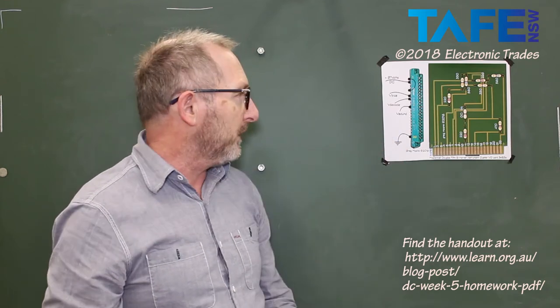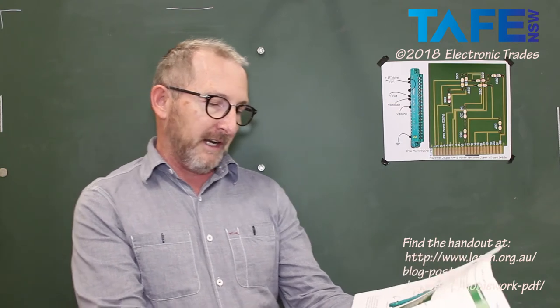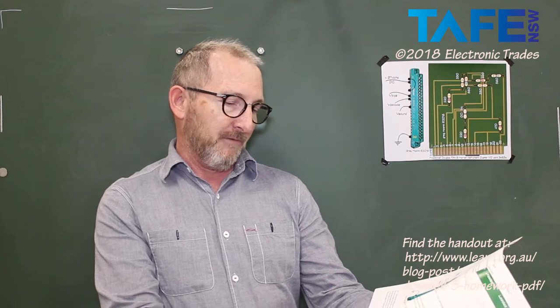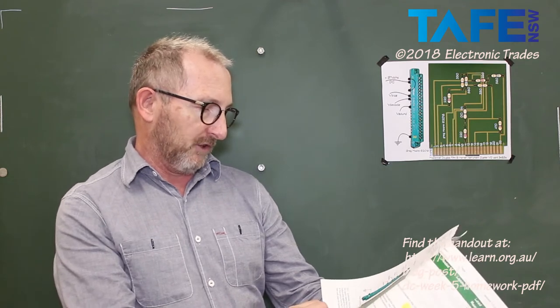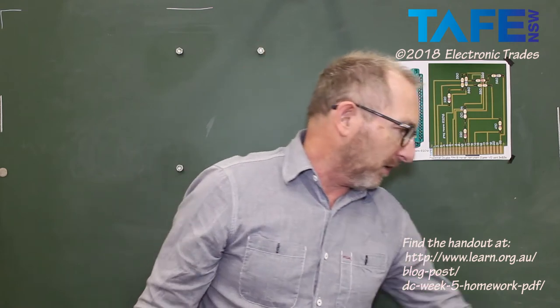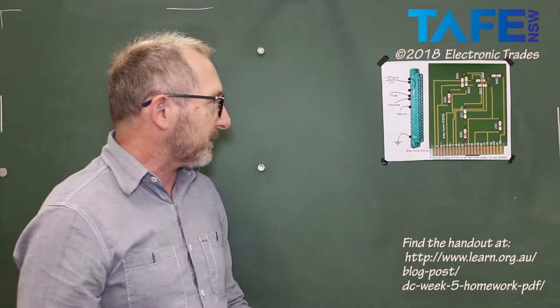Interesting board, the actual board is called a McDonnell Douglas FA18 Hornet Instrument Cluster Voltage Distribution Card 34B3A. That's a pretty exciting sort of a thing to be working on today. So without any further ado, let's get on with that then and just see what we've got in front of us.